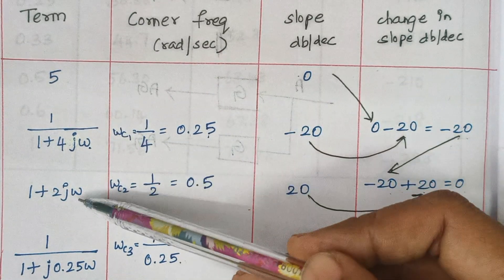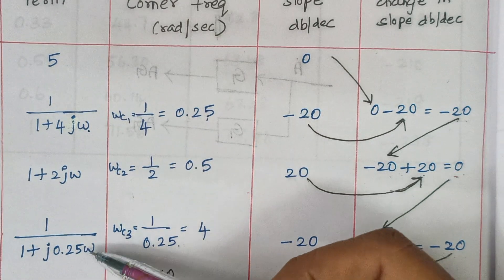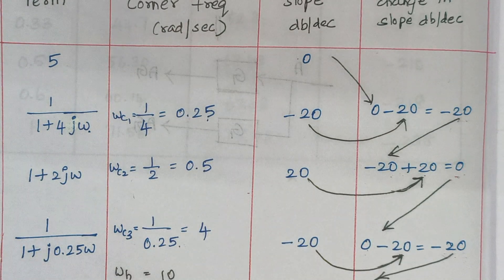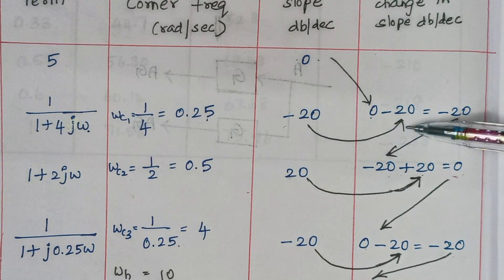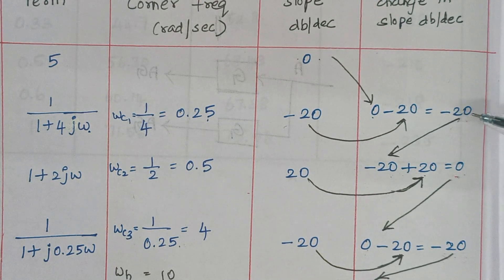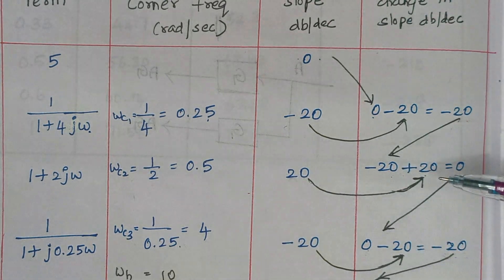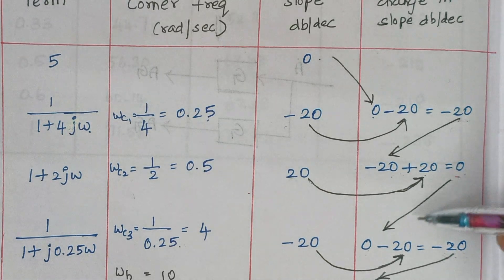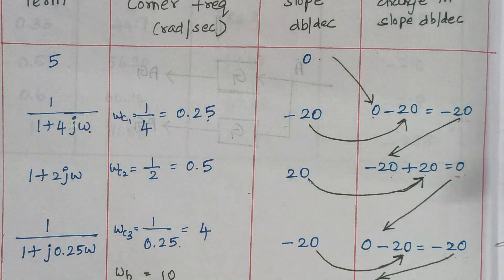Omega in the denominator contributes minus 20. Omega in the numerator contributes plus 20. Omega again in the denominator contributes minus 20. For the change in slope: 0 minus 20 gives minus 20. Then minus 20 plus 20 gives 0. Then 0 minus 20 gives minus 20. So the change of slope is calculated by pulling the slope downward and moving the next term to the right-hand side.